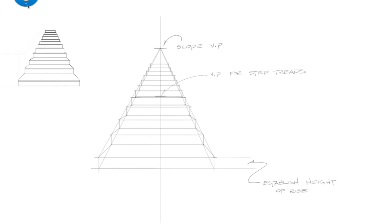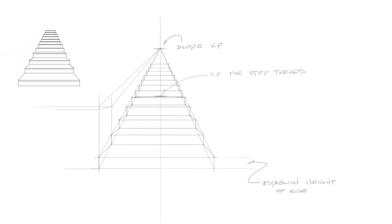In this example, I'll extend the first step and create a wall or a railing. To find the slope, I'll go to the slope vanishing point once again. Now we'll go back in and verify the final shape of the stairs.